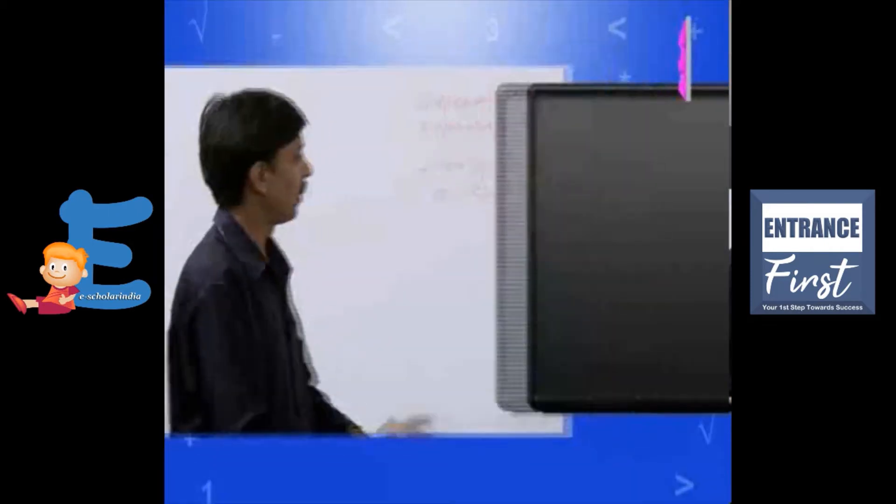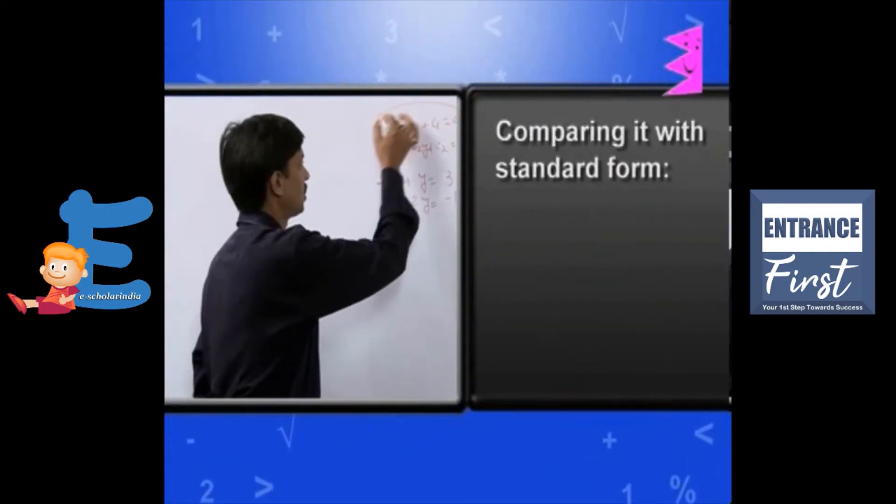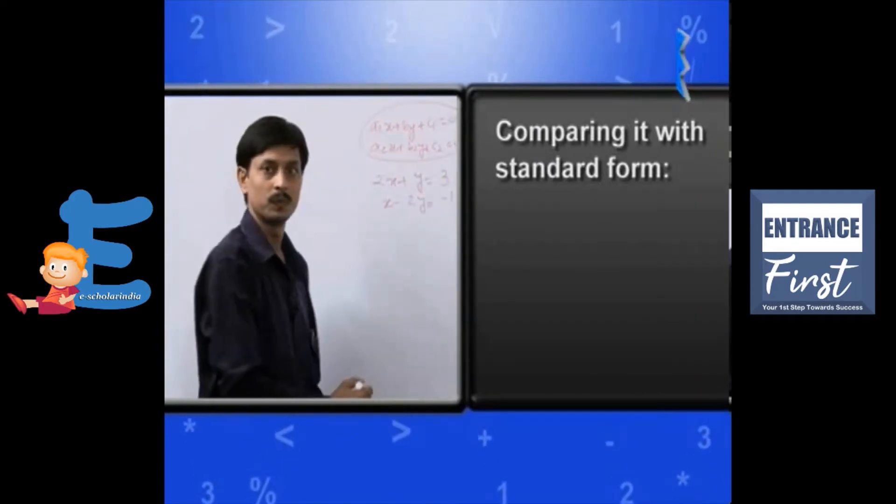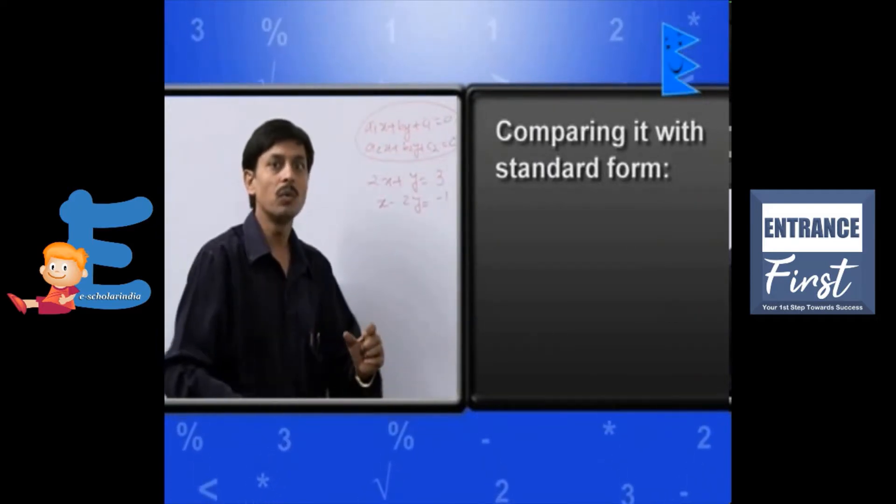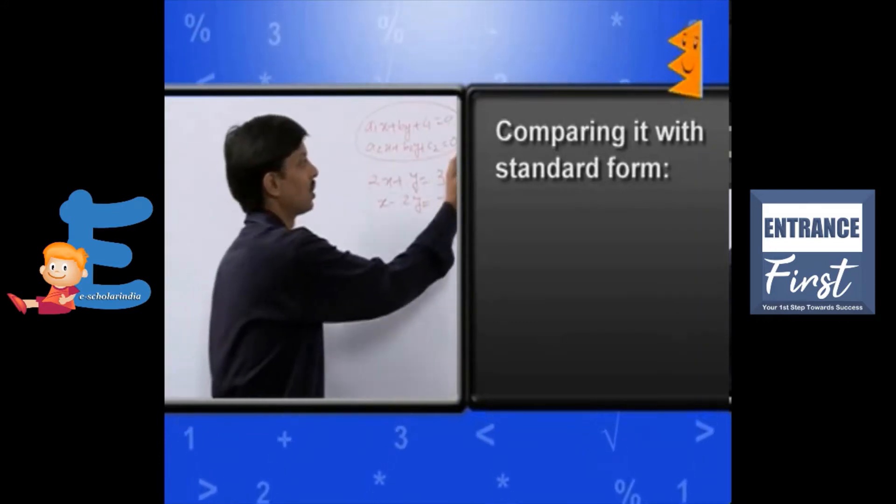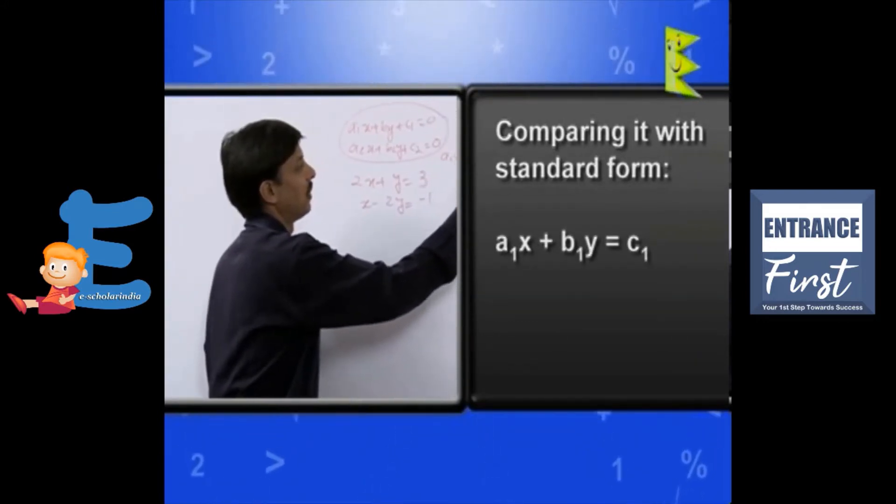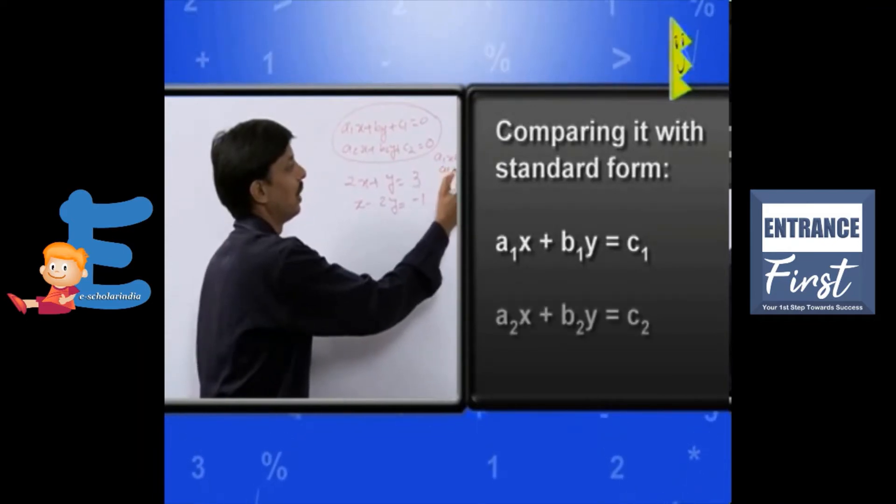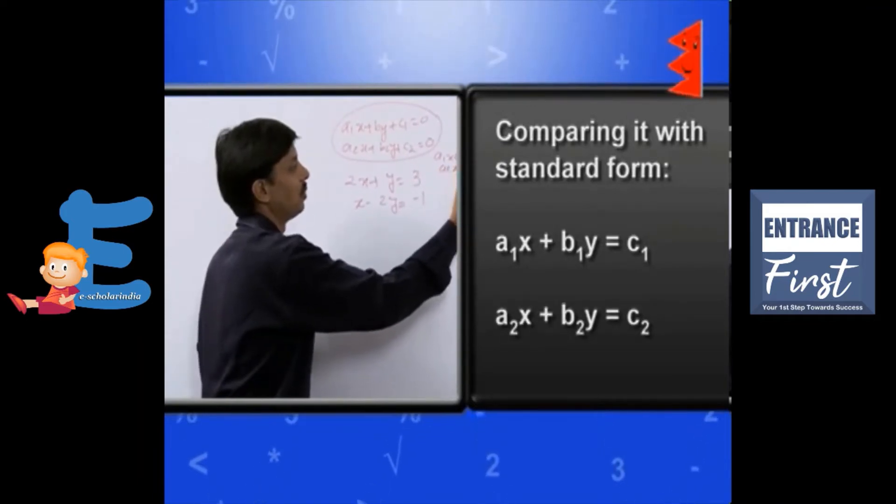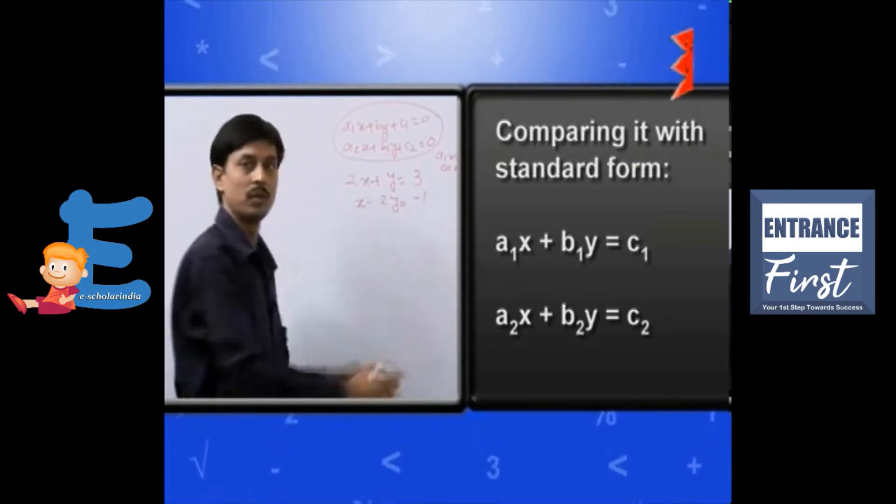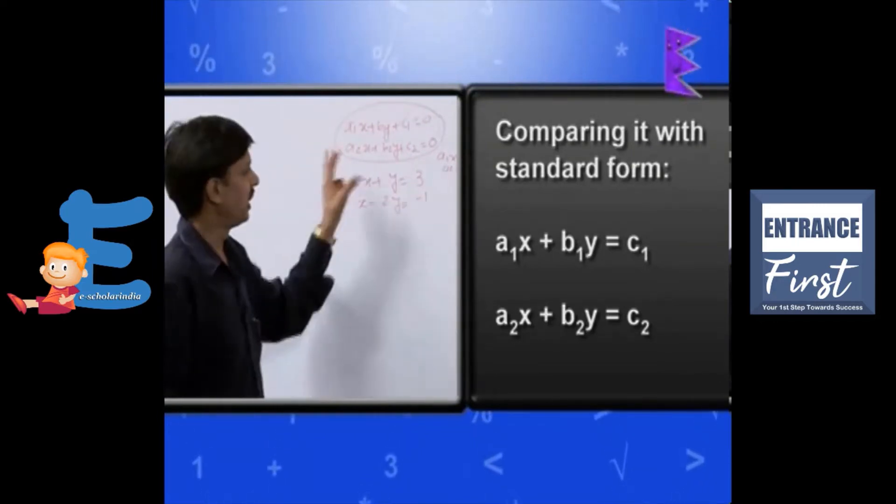Here, if I compare it with the standard form, I want to tell you that you can take this also as standard form like this: a1x plus b1y equals c1, a2x plus b2y equals c2. This is also the standard form. It depends.